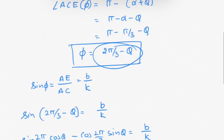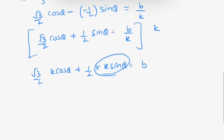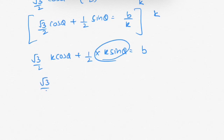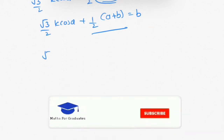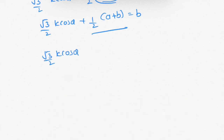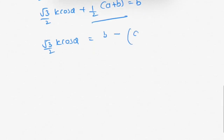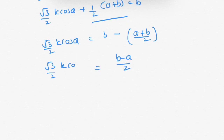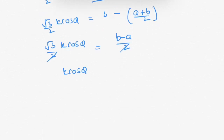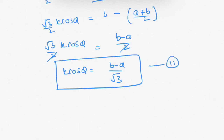Now K sin theta from equation 1 is A plus B. Substituting that value: root 3 over 2 times K cos theta plus one half times (A plus B) equals B. Taking the second term to the right-hand side: root 3 over 2 times K cos theta equals B minus (A plus B) over 2, which simplifies to (B minus A) over 2. Cancelling the 2's gives K cos theta equals (B minus A) over root 3. Name this as equation number 2.